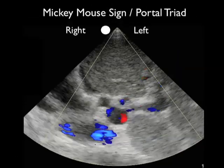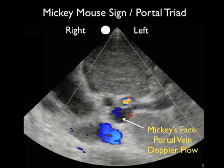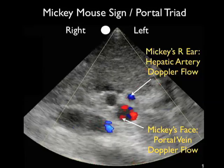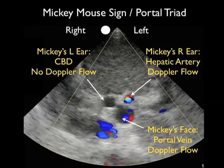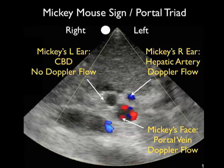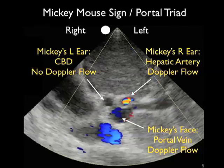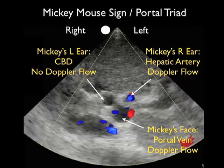We can place Doppler sonography onto the Mickey Mouse sign to further delineate the structures. The portal vein making up Mickey's face — the posterior-most structure of the portal triad — will light up with Doppler sonography. We can also see that Mickey's right ear, the hepatic artery, also has Doppler flow. However, the common bile duct — Mickey's left ear — fails to show any Doppler flow due to the sluggish flow within the common bile duct.